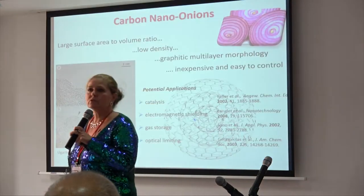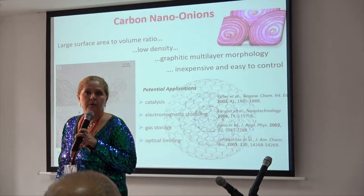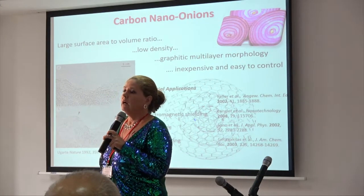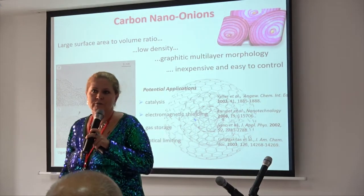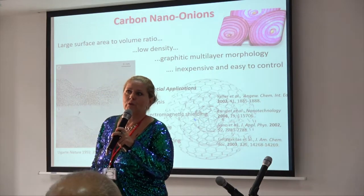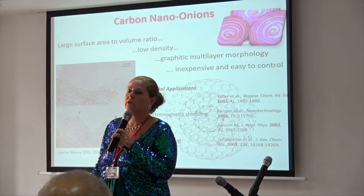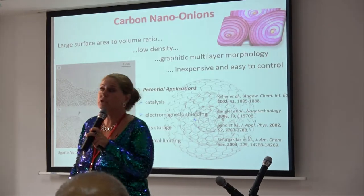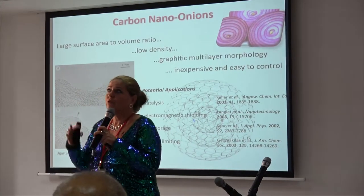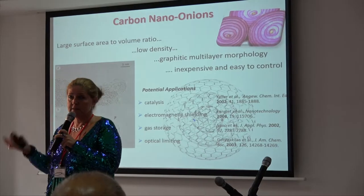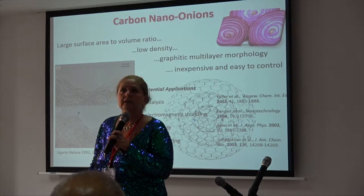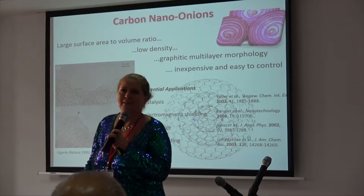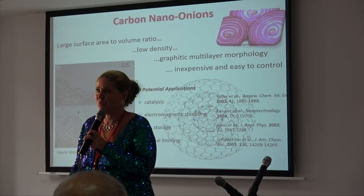What I really want to talk to you about today is our carbon nano onions. These are multi-layered fullerenes and they share lots of properties in common with other carbon nano materials. They have large surface area to volume ratio, they are graphitic with a graphitic multi-layer morphology, they are inexpensive and easy to control, in particular when we compare them to carbon nanotubes.